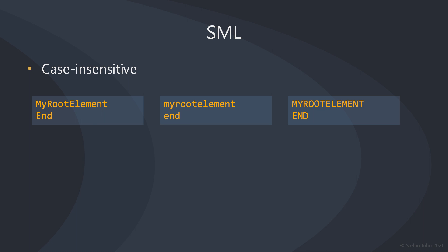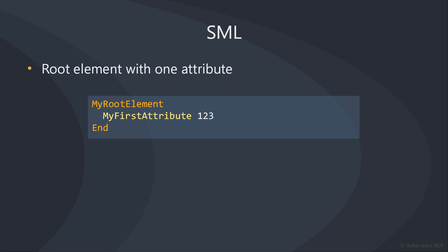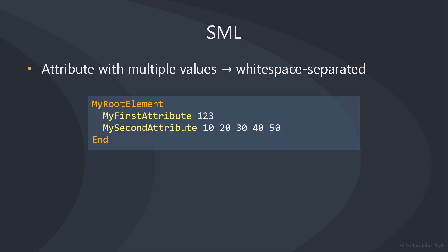Now that we have seen an empty root element, let's add our first attribute to it. This new line starts with whitespace to signal that the attribute is a child node of the root element. After the whitespace follows the attribute's name. The attribute only holds one value, 123, which is separated by whitespace from the attribute's name. We now add a second attribute which has multiple values. All values are separated by whitespace as well, which makes it really fast to type. Remember, an attribute is a named array of string values, which means all values are handled as strings because SML does not define any value types.